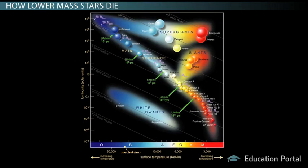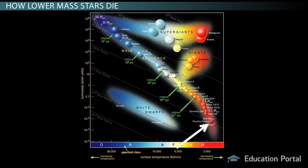In this lesson we'll take a look at how lower main sequence stars die, namely the medium mass stars and very low mass stars like the red dwarfs.